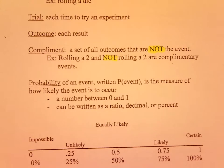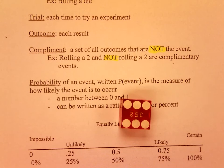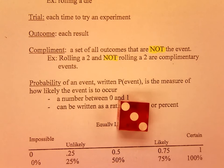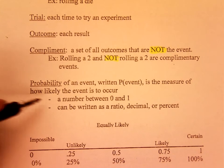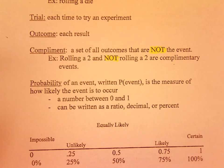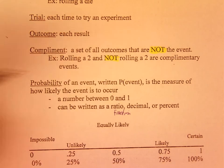The probability of an event is written as P followed by the event in parentheses. So the probability of getting a 6 is written P(6), and P(3) means the probability of getting a 3. It is the measure of how likely the event is to occur — a number between 0 and 1. You can have 0.5, 0.44, 0.38, or 1, but you cannot have 1.7 or negative numbers. Probability can be written as a ratio, fraction, decimal, or percent.